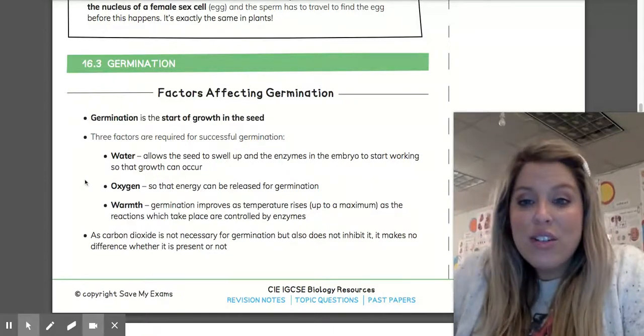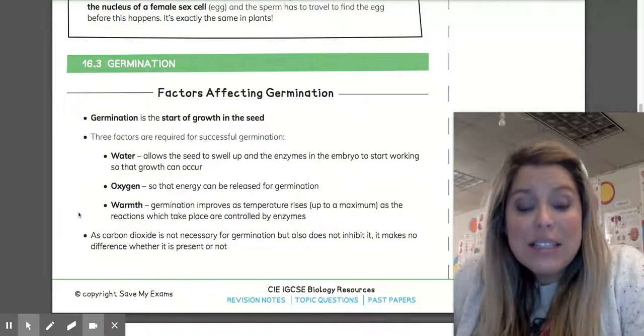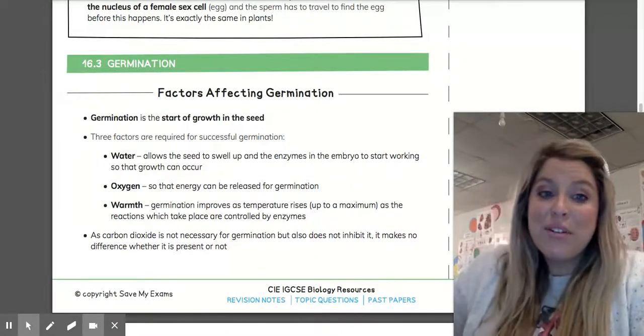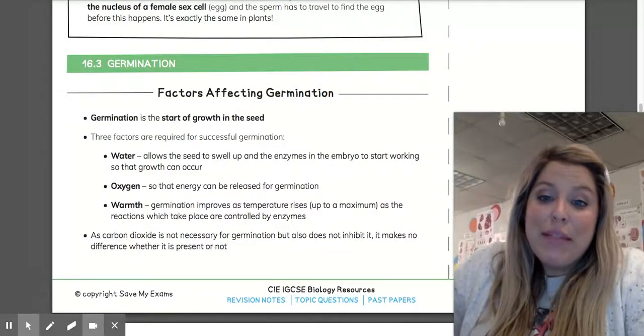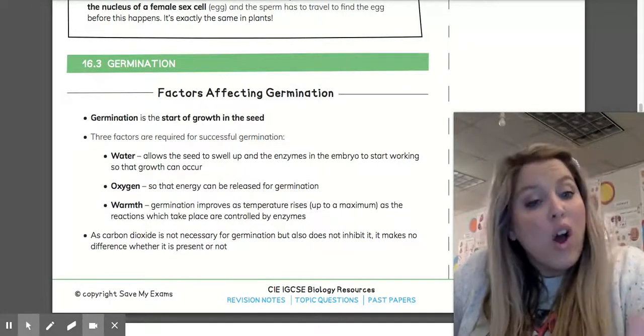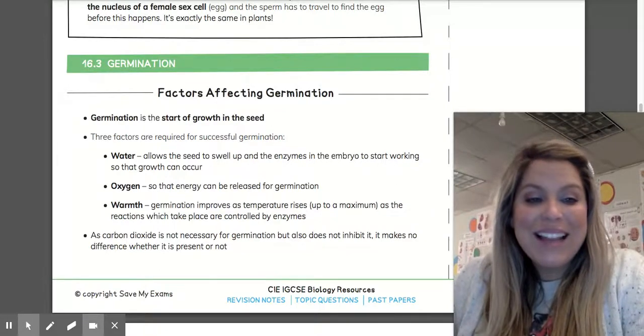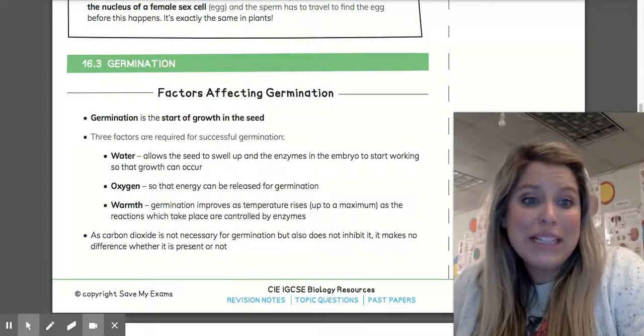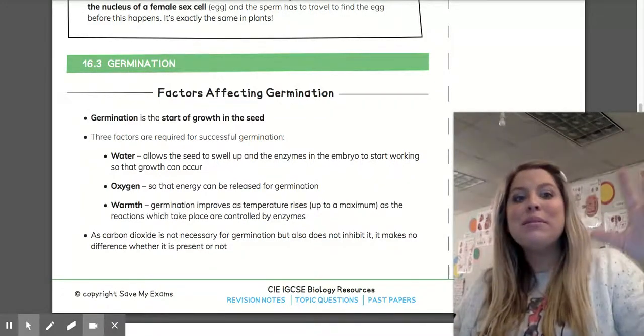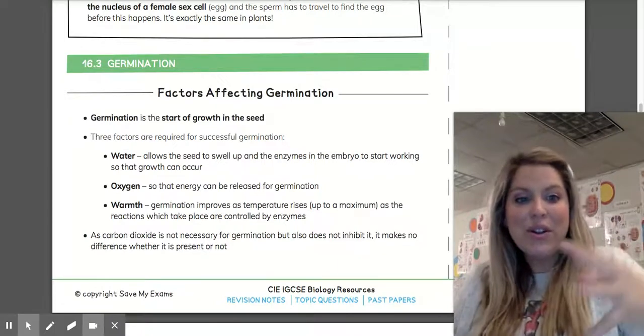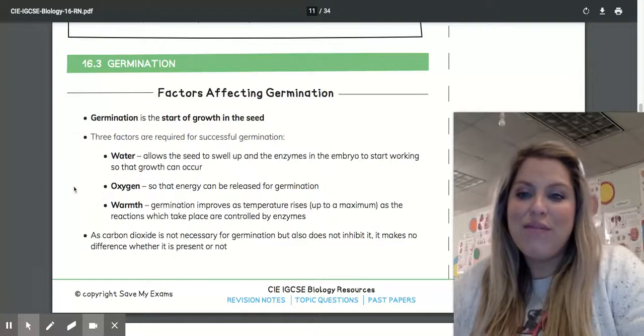And then warmth - germination improves as temperature rises, as the reactions which take place are controlled by enzymes that are controlled by temperature. Think about springtime when it starts to warm up outside, you see everything in bloom. It's the same concept because the earth is warming up, the temperature is rising, and there's more reaction occurring for germination and growth.